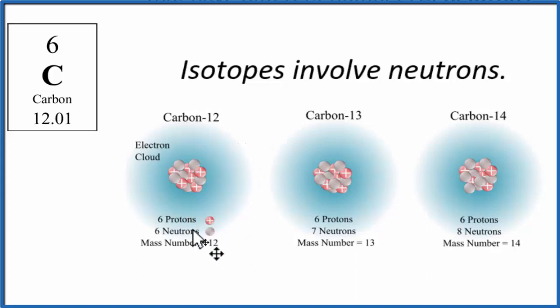Carbon-12, six protons, six neutrons. Carbon-13, seven neutrons and six protons. The key idea is, we have an element called carbon, and it's defined by six. Six protons, that's its atomic number. But the isotopes of carbon can have different number of neutrons. And our neutrons and protons give us the mass number.